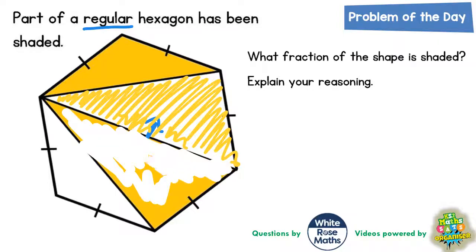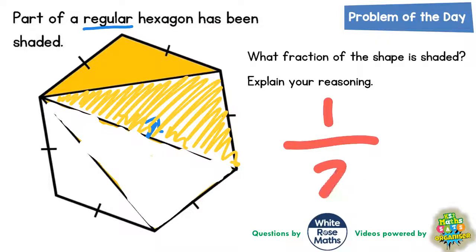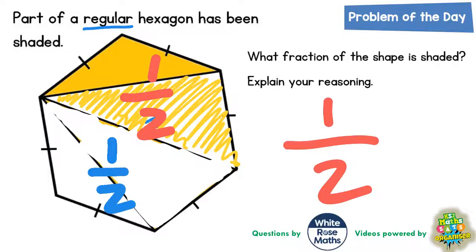And basically what you've got then is you've got half of the hexagon shaded yellow, and half of the hexagon shaded white. So the very simple answer is that it is exactly one half. Because the yellow shapes are one half, and the white shapes are also one half of the hexagon, simply because that is a line of symmetry down the middle.